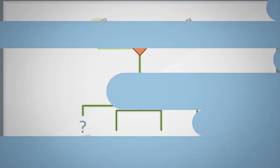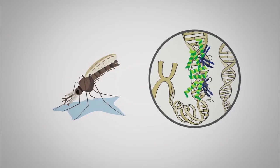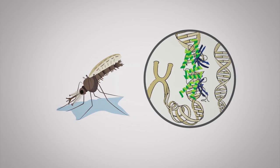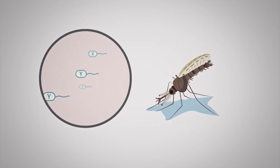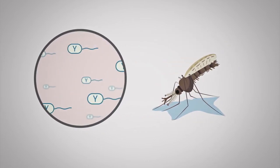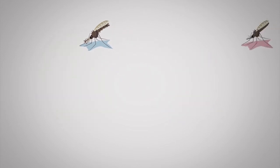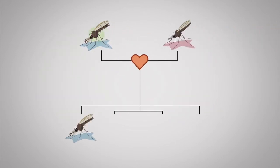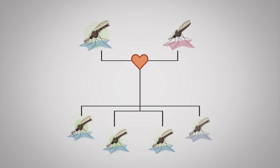For example we are using the enzyme to cut the DNA of the X chromosome while males are making their sperm. This means that almost no functioning sperm carry the female X chromosome and as a result mostly male offspring will be produced.